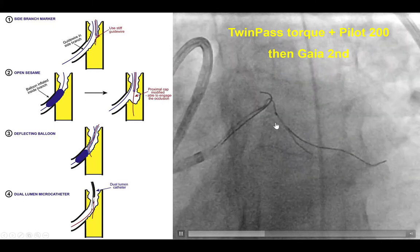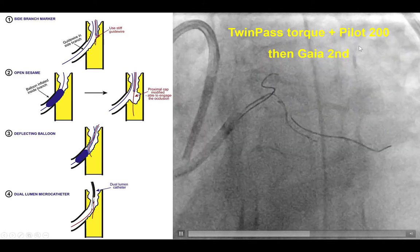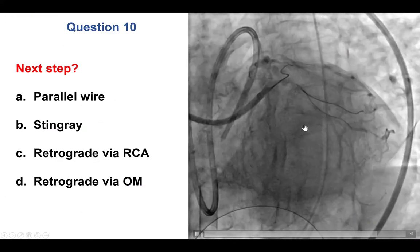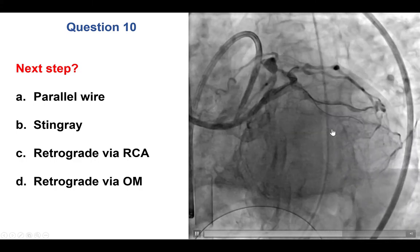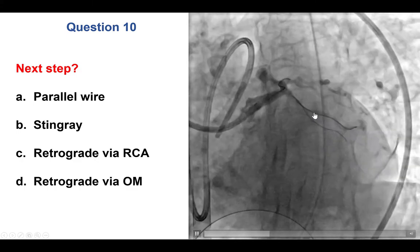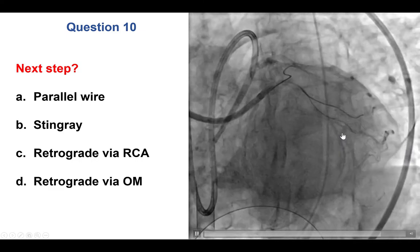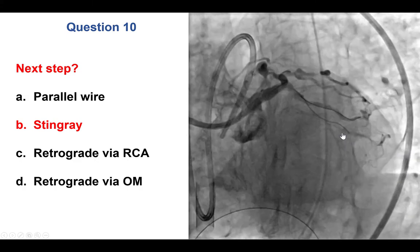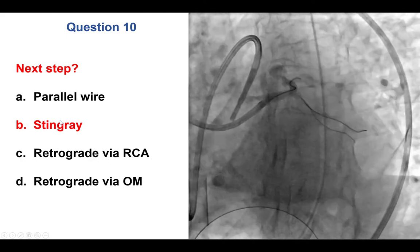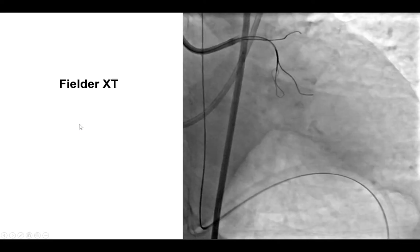A dual-lumen microcatheter approach was used — a Twin-Pass Torque through which a Pilot 200 and GAIA 2 were advanced in the course of the obtuse marginal branch. Ipsilateral injection showed the guide wire dancing along the vessel, a positive sign, but it was not within the distal true lumen — the wire was in the subintimal space. Options included parallel wire, stingray re-entry, or retrograde through the right coronary. The decision was to attempt stingray re-entry.